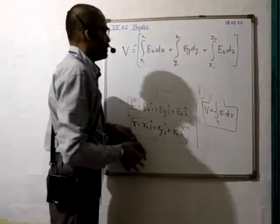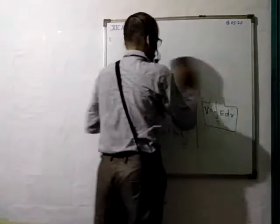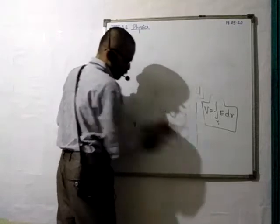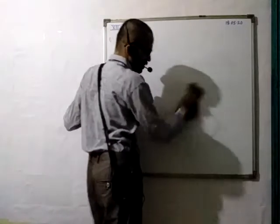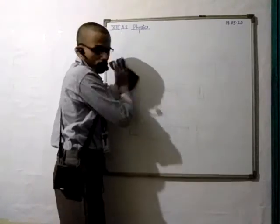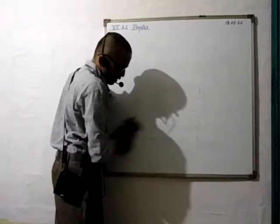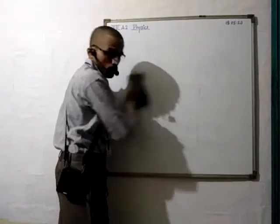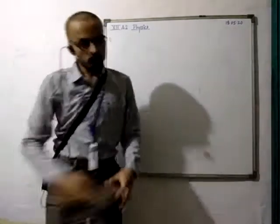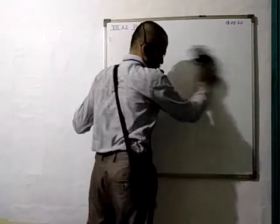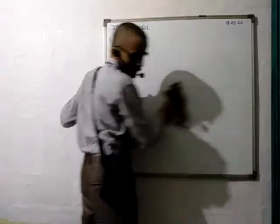After this, we discussed potential for a shell, potential for a conducting sphere — everything. I am not going to explain that again because in my previous videos I showed you. So you will revise from that video. But do revise the sphere and shell portion — that must be done properly.